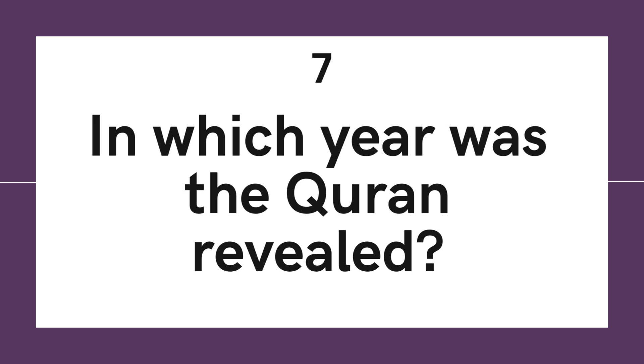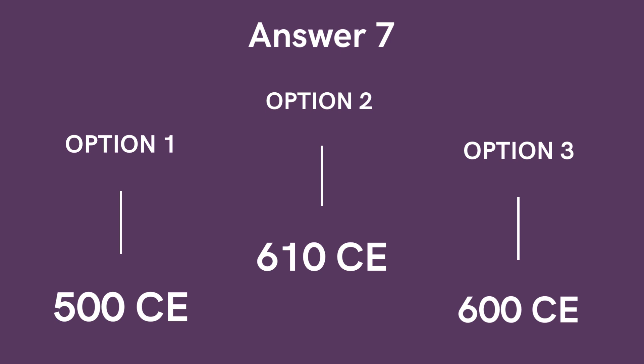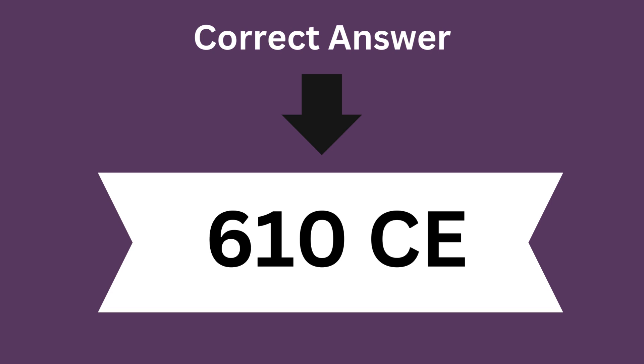Question 7: In which year was the Quran revealed? Options are: Option 1: 500 CE (common era). Option 2: 610 CE. Option 3: 600 CE. And the correct answer is 610 CE.